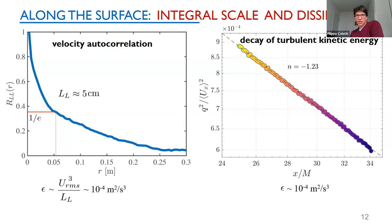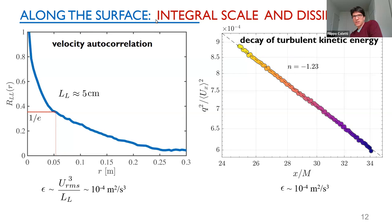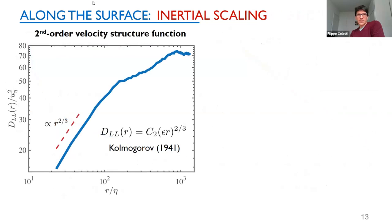The fluctuating energy on the free surface decays in the streamwise direction following a power law with exponent around minus 1 to minus 1.2, consistent with classic decaying turbulence results in the bulk. This is a hint that the free surface is behaving like the bulk turbulence.